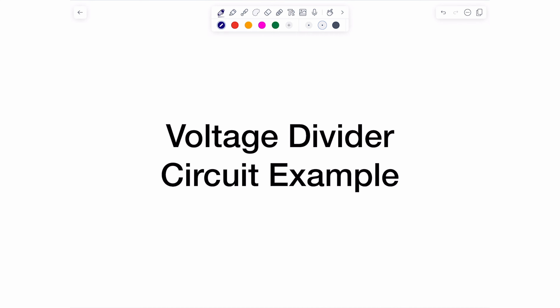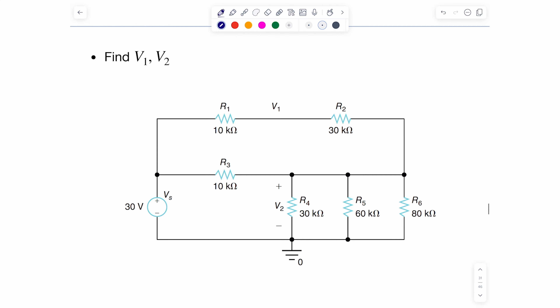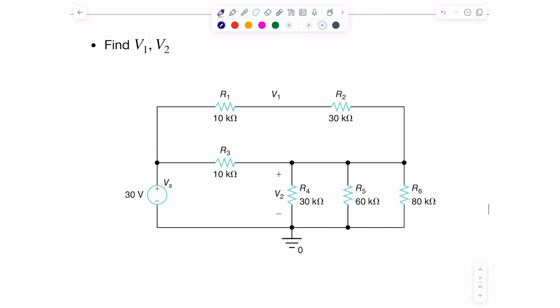In this example I'll show you a circuit and we'll use mostly the voltage division rule and some simplification of combinations of resistors to figure out a bunch of voltages. This circuit has several resistors — specifically six resistors and one voltage source — and we're asked to compute two voltages: v1 and v2.